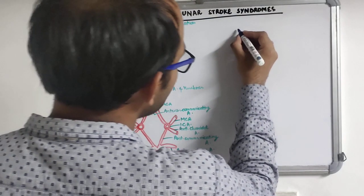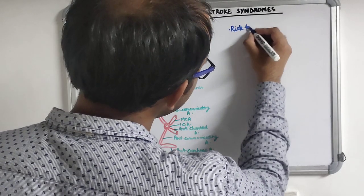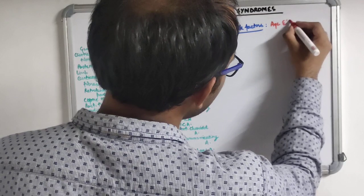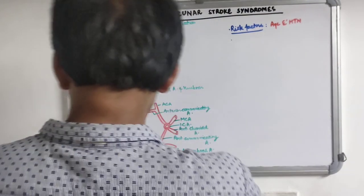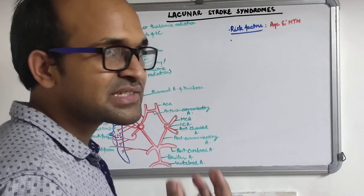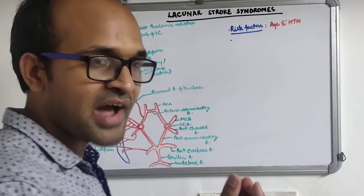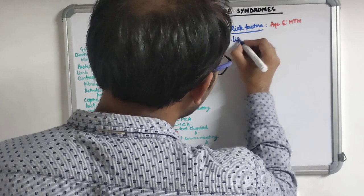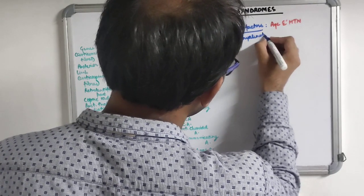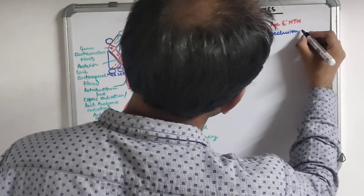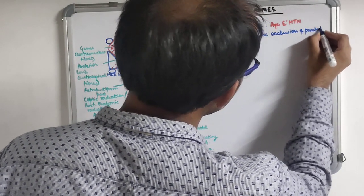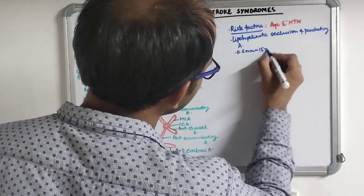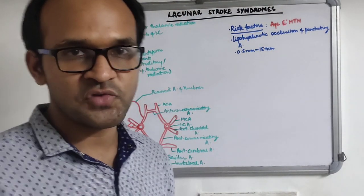The most important risk factors for lacunar stroke are age and hypertension. The pathophysiology involves lipohyalinotic occlusion of penetrating arteries - it is essentially a small vessel disease. There is small ischemic infarction in deep areas of the brain or brainstem due to occlusion of penetrating arteries. These small ischemic infarctions can range in size from 0.5 mm to 15 mm, and can classically result in five stroke syndromes.